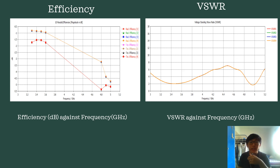For the VSWR against frequency graph, it shows that the frequency between 3.3 GHz to 3.6 GHz and 4.8 GHz to 5.0 GHz has the lowest VSWR value. The lower value of VSWR indicates lower reflected power from the antenna.